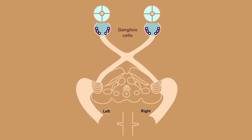The ganglion cells are stimulated by light rays from the opposite half of the visual world, bent onto the retina by the cornea and lens, so the retinal fields are just the opposite of the visual fields. To avoid confusion, we only talk about the visual fields.